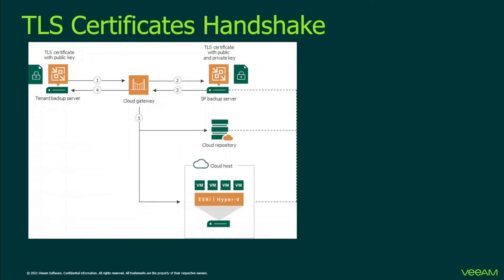We can see the schema here, where we have a tenant backup server connected to the service provider backup server running CloudConnect. In between, there is the Cloud Gateway component, which is responsible for creating the configuration of the tunnel. We have TLS certificates here, and we will see later in the demo how they are configured and installed. It's important to understand the flow — there are five different steps in the handshake process between the tenant and the service provider.